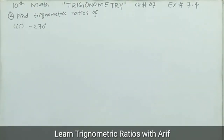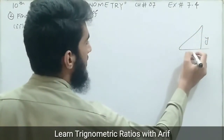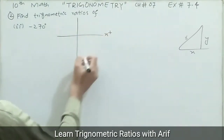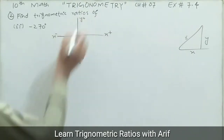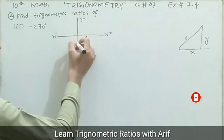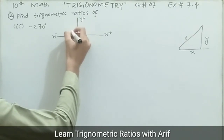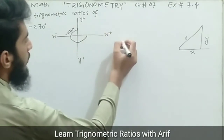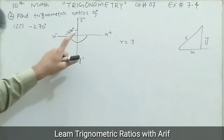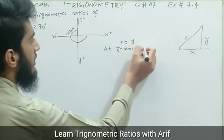Now finding the trigonometric ratios for part two: negative 270 degrees. Drawing the Argand plane with positive x-axis, negative y-axis, negative x-axis, and positive y-axis. Since the angle is negative, we move clockwise: 90, 180, then another 90 gives 270 degrees. So negative 270 degrees lies along the positive y-axis, and the radius r lies along the positive y-axis, meaning r equals y.